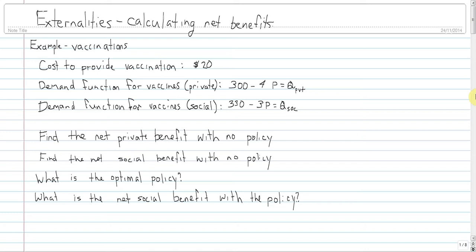So if the social benefit exceeds the private benefit, you've got a positive externality. If the social cost exceeds the private cost, then you've got a negative externality. Or if the social benefit is lower than the private benefit, then you've got a negative externality.